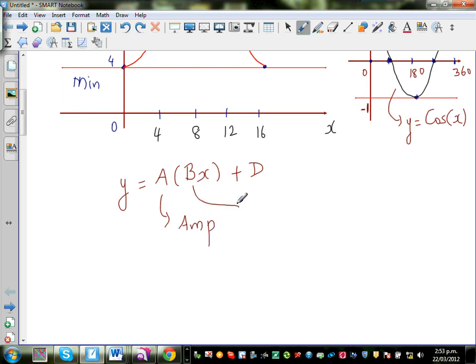B tells you the period. B tells you the, from b you can find the period. So b, the formula for b is, b is equal to 360 divided by the period. I will explain that later on. Just you write, this is a good formula to remember. And d is your baseline.